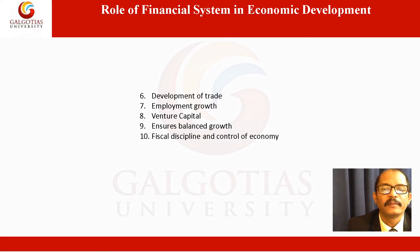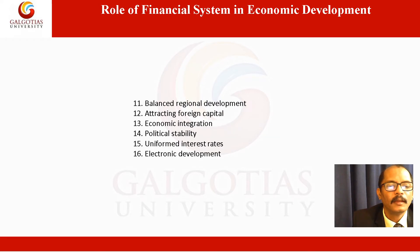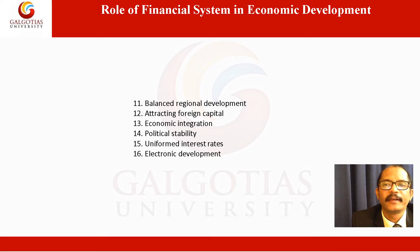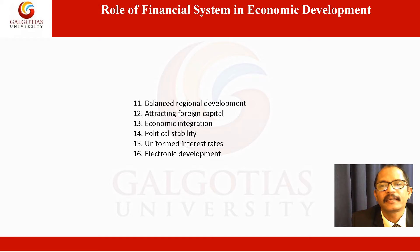The growth of black money can also be minimized. The financial system also helps in balanced regional growth. Through the financial system, backward areas can be developed by providing various concessions. This ensures balanced development throughout the country and will mitigate political or other kinds of disturbances. It will also check the migration of rural populations towards towns and cities.